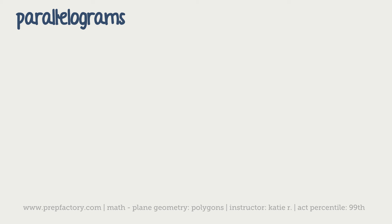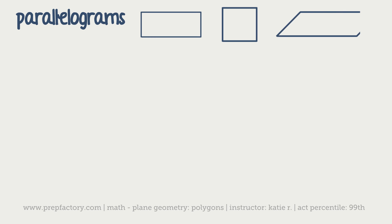Our first specific type of polygon is the parallelogram. Squares and rectangles are actually parallelograms — they come in different shapes, including slanted sides. The important parts are that opposite sides are always parallel to one another and opposite angles are always equal. To find the area of a parallelogram, multiply base times height. For a slanted parallelogram you need to drop the altitude to get your height, but you still just multiply base times height.